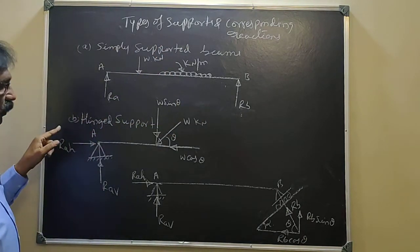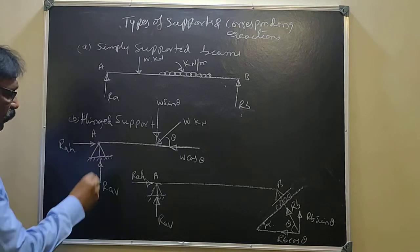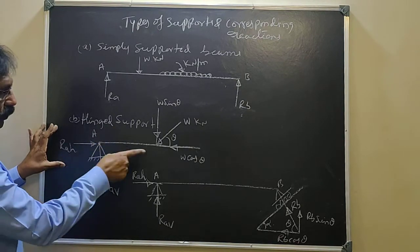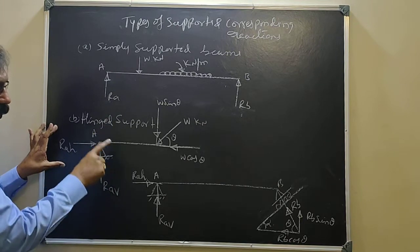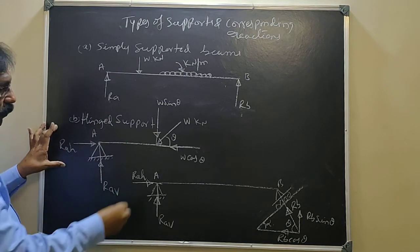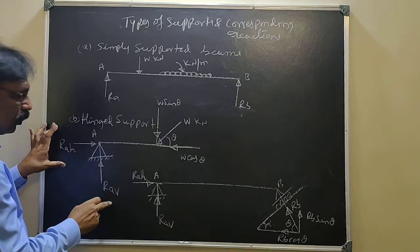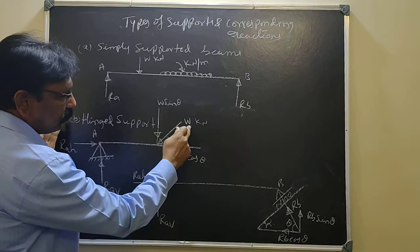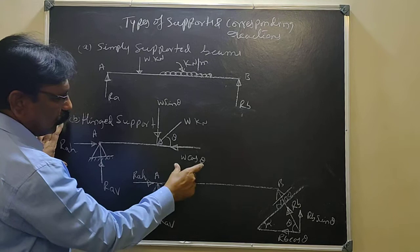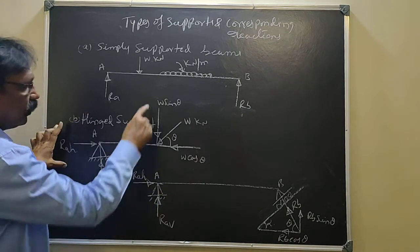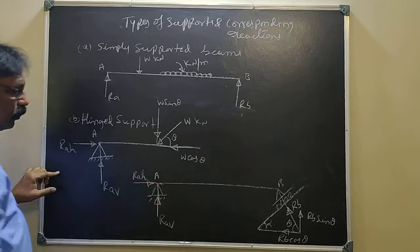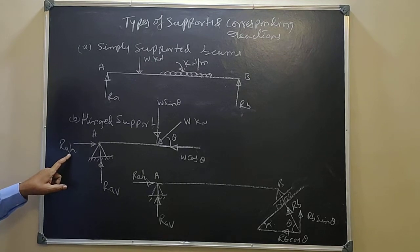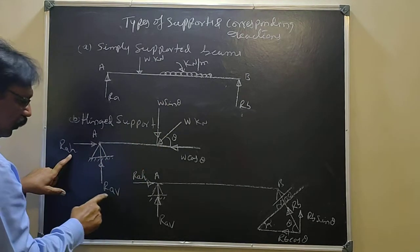The second type of support is the hinged support, also called a pin support. At this point the beam can rotate in the vertical plane only; it cannot move in the horizontal direction. If the load is vertical there will be a vertical component, and if the load is inclined it must be resolved into two components. For example, if W Newton is the weight, the components are W cos θ and W sin θ. To balance W cos θ, a horizontal reaction RAH is developed at the hinge, and for the vertical load the vertical reaction RAV is developed.